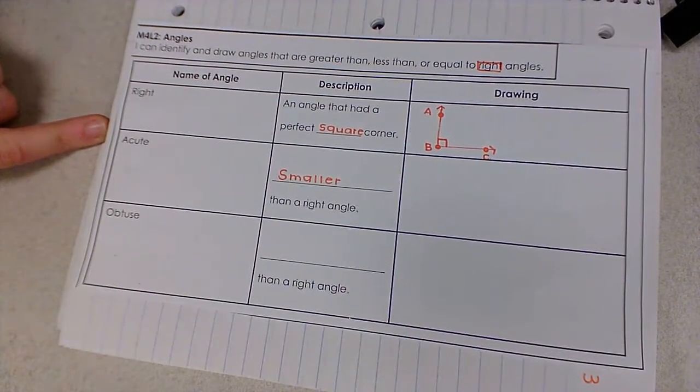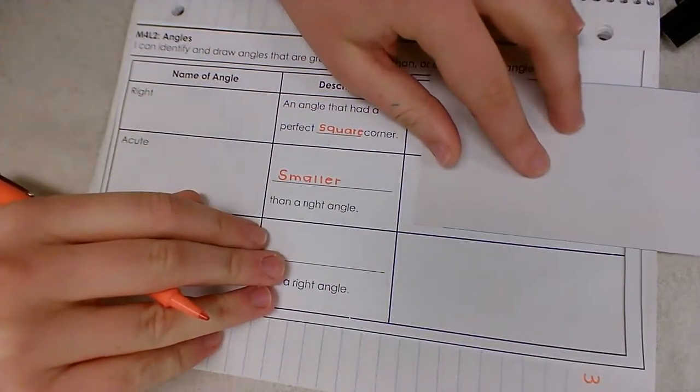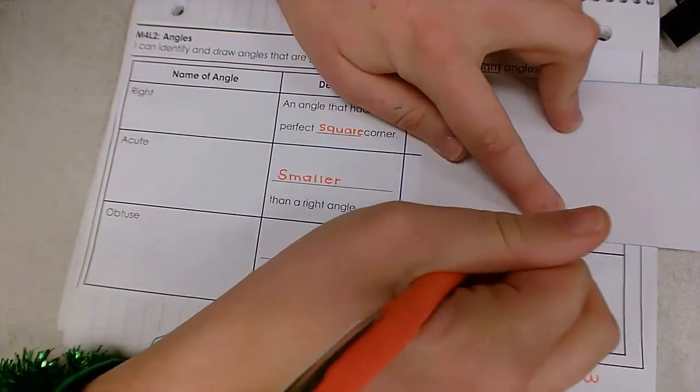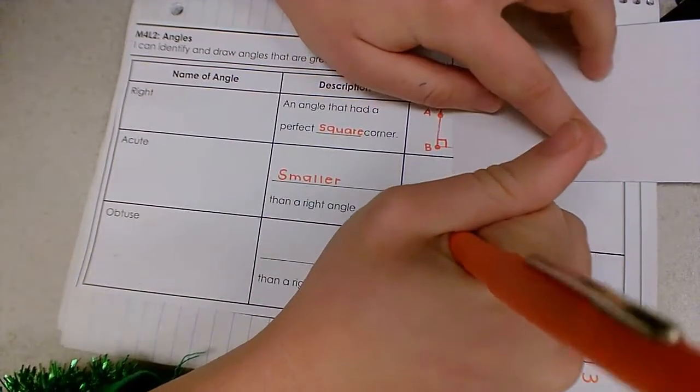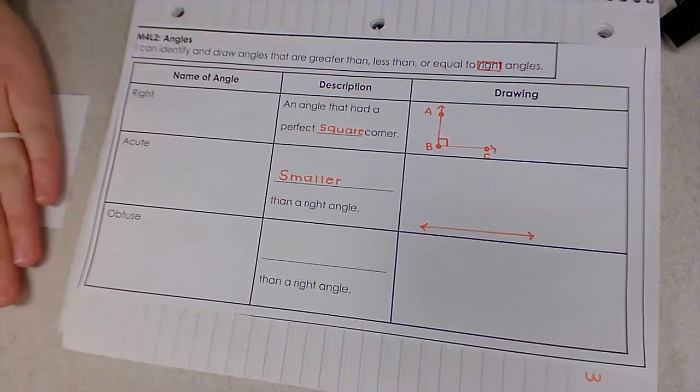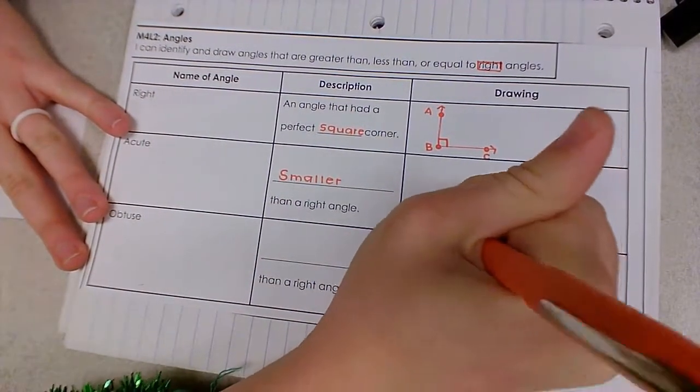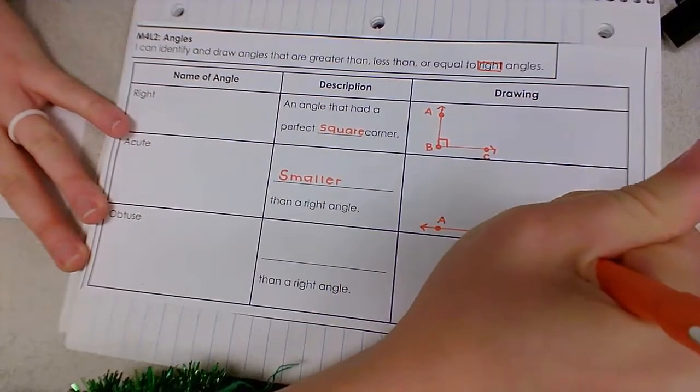So let's draw an example. I'm gonna use my straight edge note card to draw one line and I'll make it a full blown line. One that extends on in both sides. A, B.